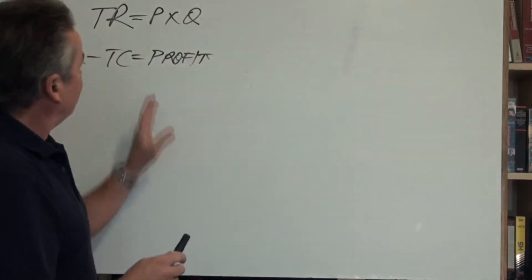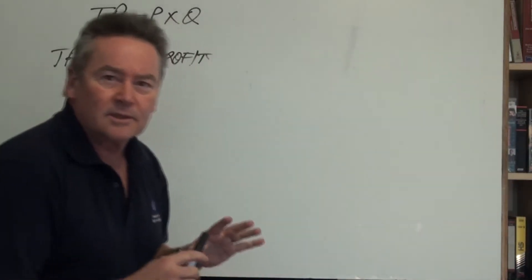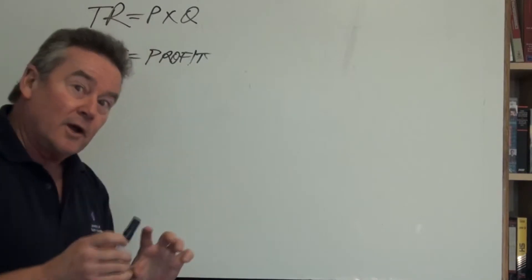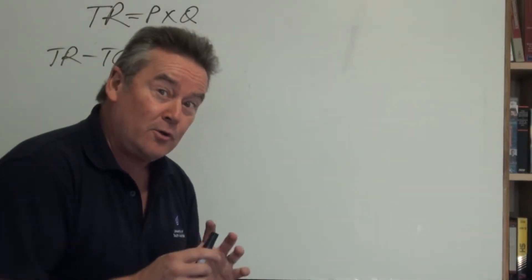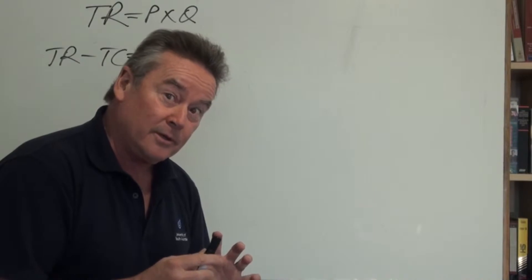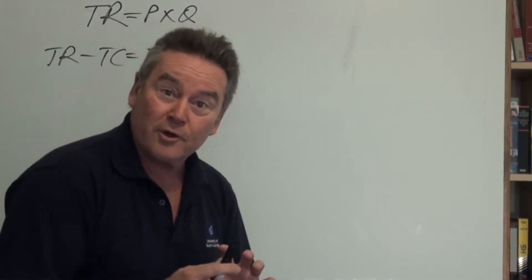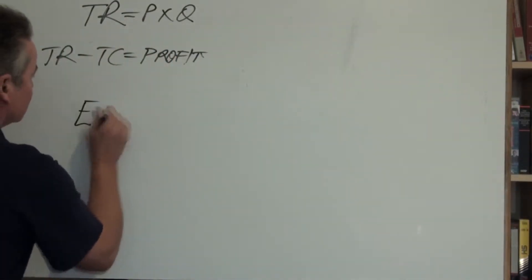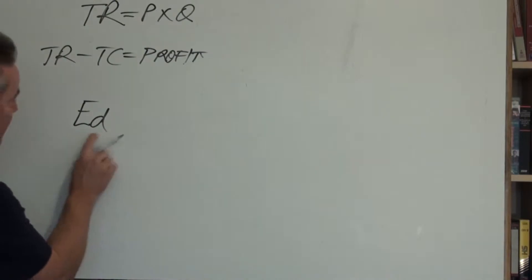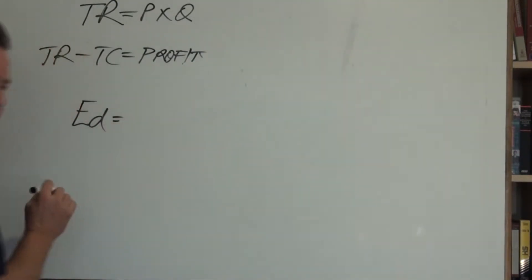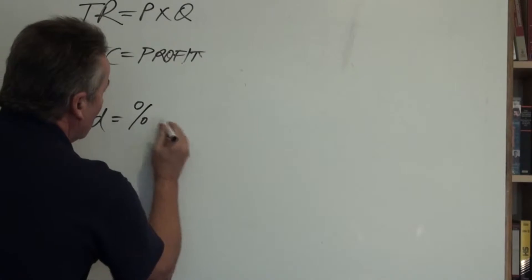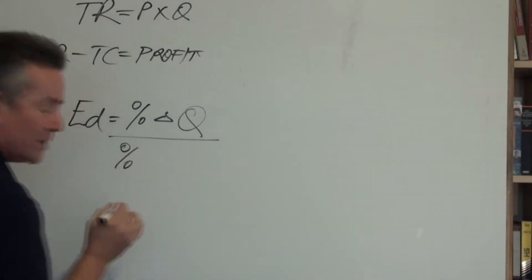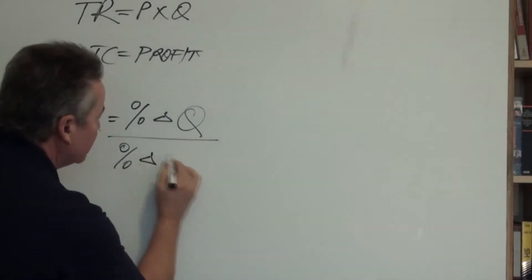So here's the problem. If you put your prices up and the law of demand holds true, then Q's going to fall. What if the percent change in Q is greater than the percent change in P? Then the impact on Total Revenue is not going to be favorable. What we need to know is ED, the price elasticity of demand. We need to know what will be the percent change in quantity demanded in response to some percent change in price.